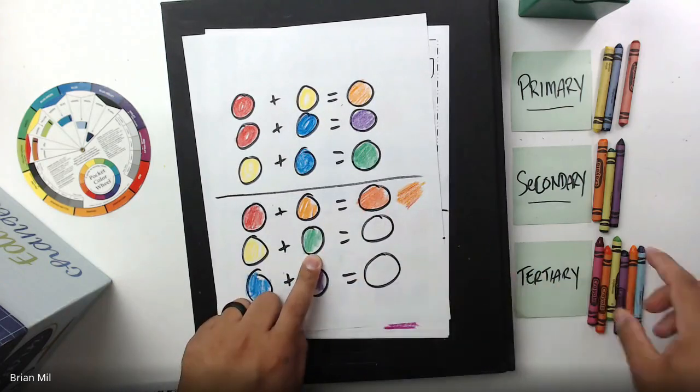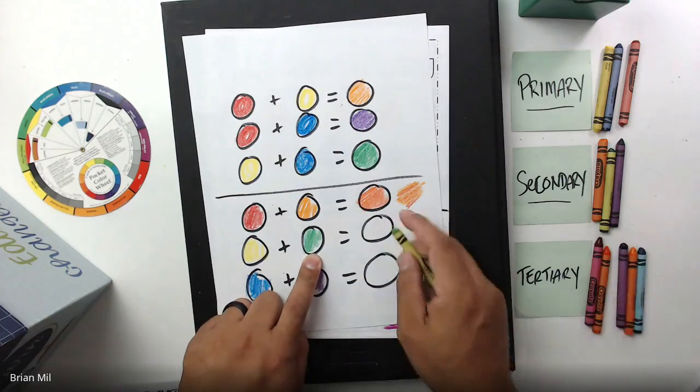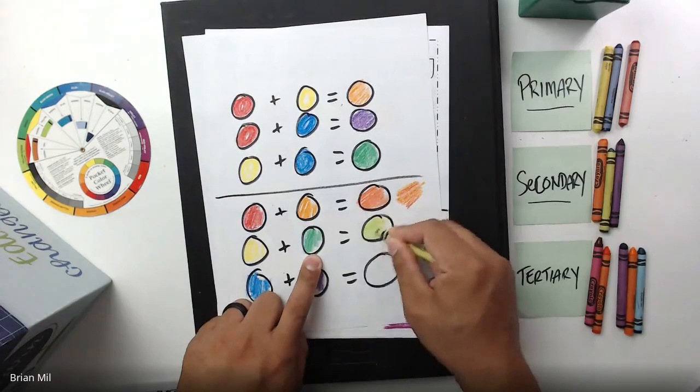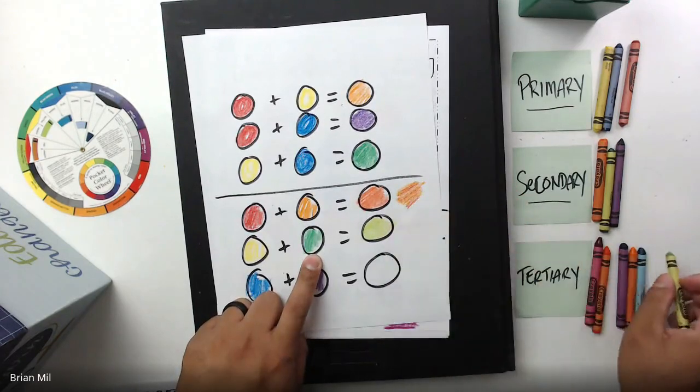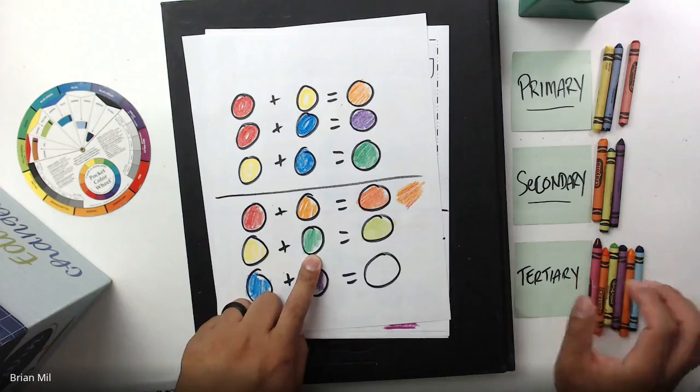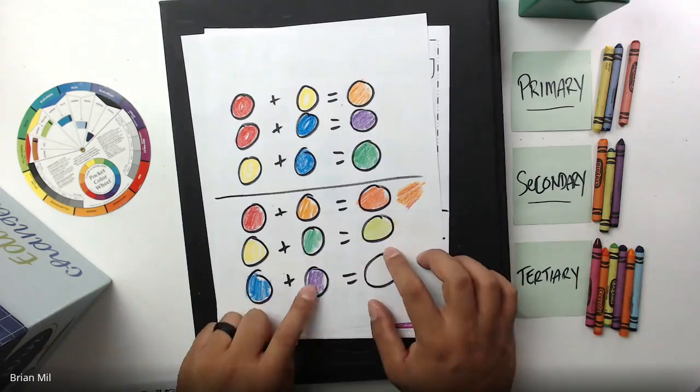The next one, yellow plus green, will equal a color called yellow green. Again, if you don't have this color, you can always add yellow and green together and it'll look just like this.